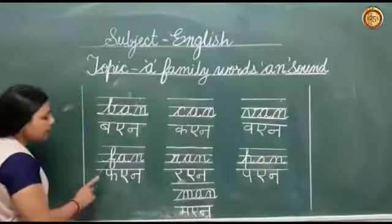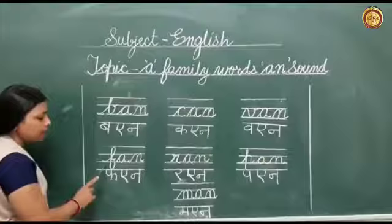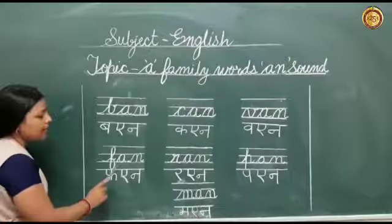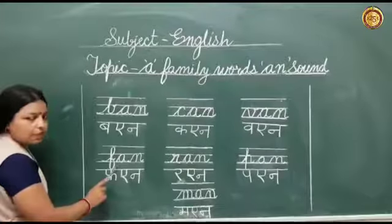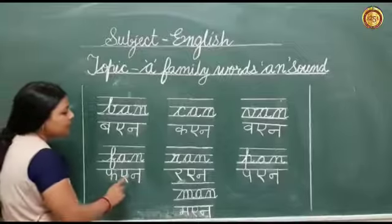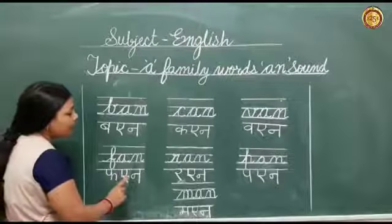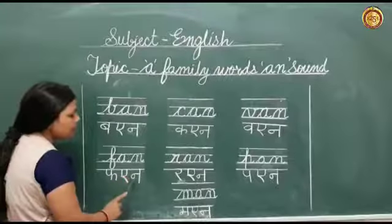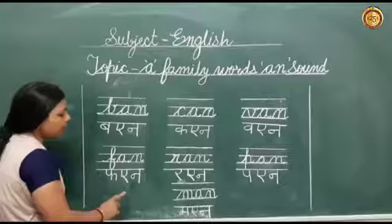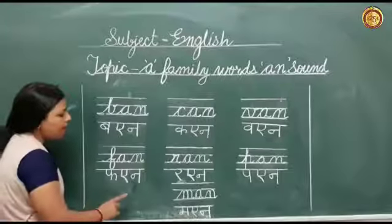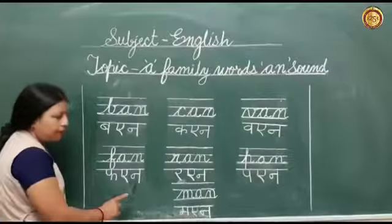This is letter F. The sound of F is 'fuh'. This is letter A. The sound of A is 'A'. This is letter N. The sound of N is 'N'. So we can read it like this: fuh, A, N — FAN.